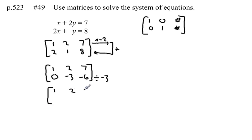So I've got 1, 2, and 7 across the top. Top row stays the same. The new bottom row is 0. Divide this by negative 3, I get 1. Divide this by negative 3, I get 2.